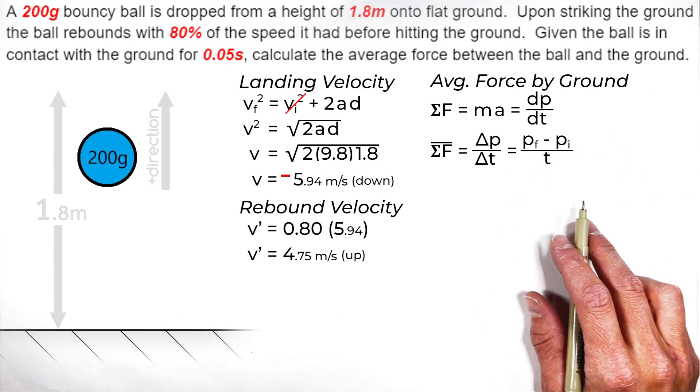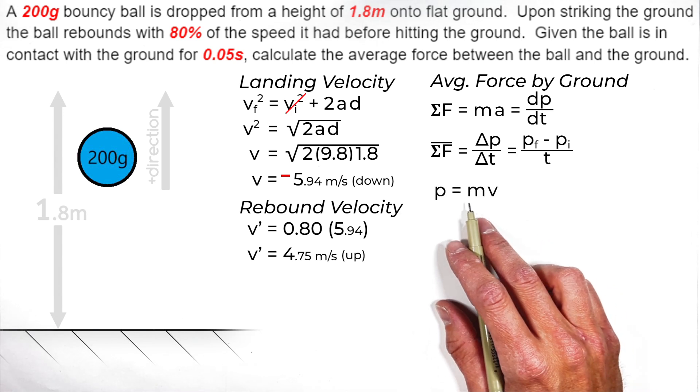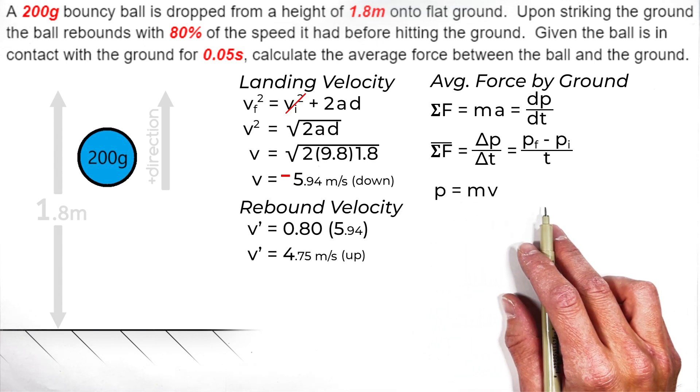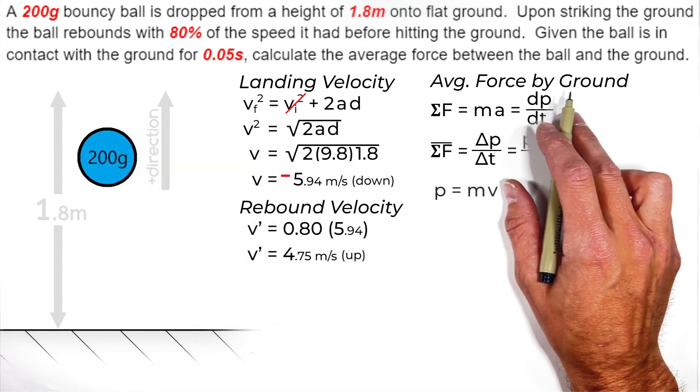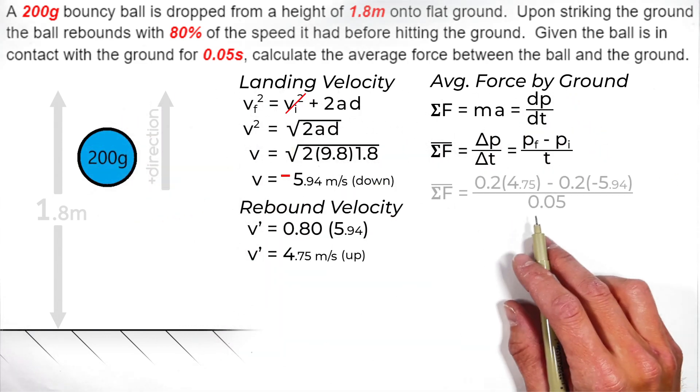Now our initial and final momentum can be calculated using the equation P equals MV, or linear momentum is mass times velocity. So plugging in the numbers given to us in this problem and what we've calculated...